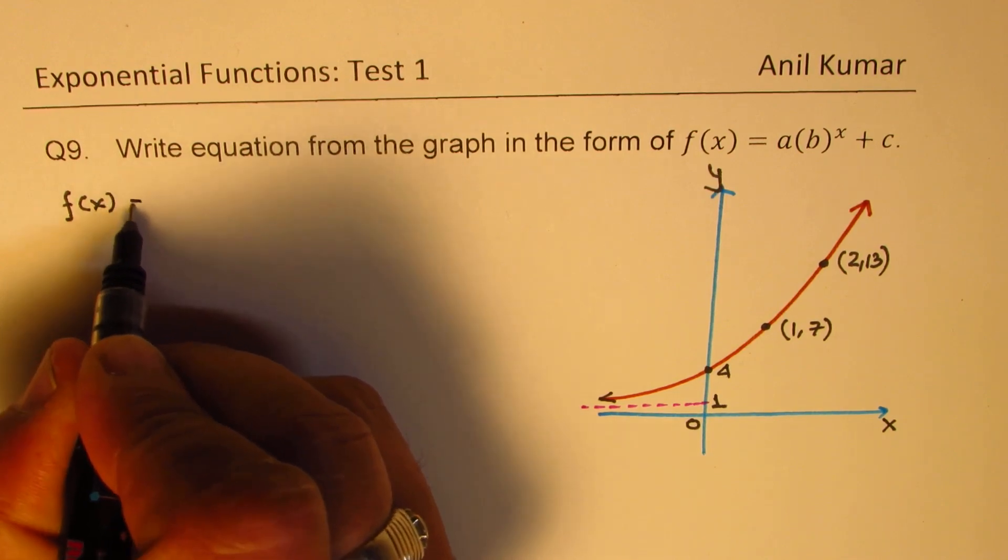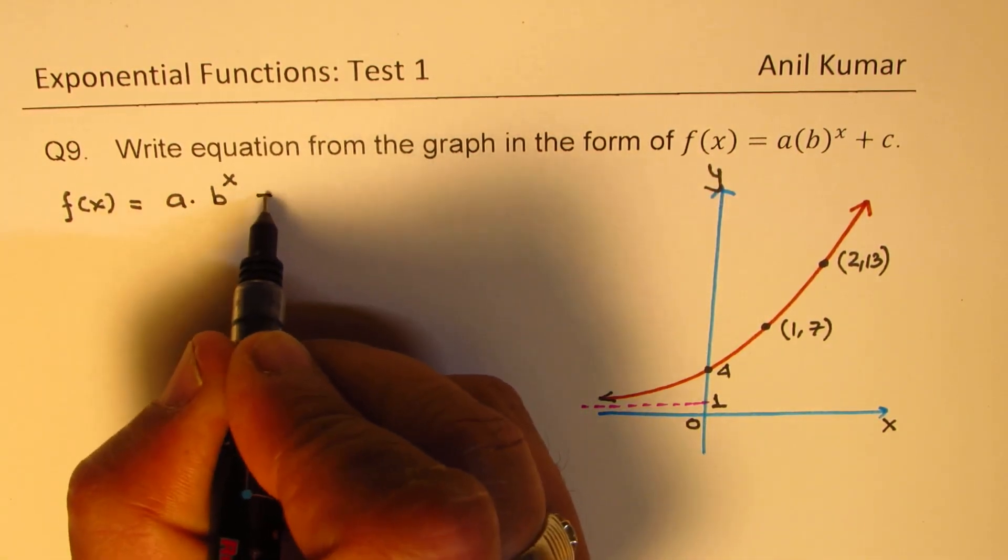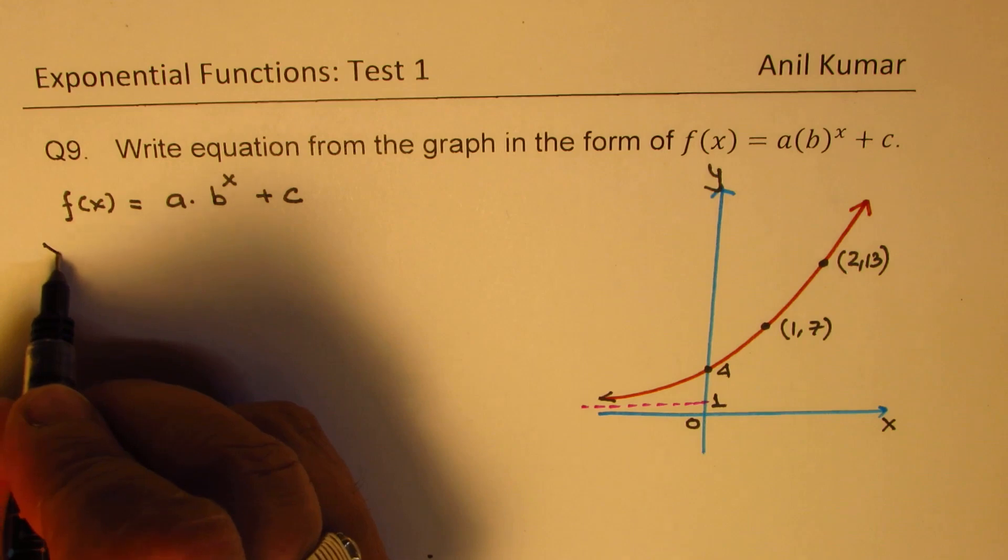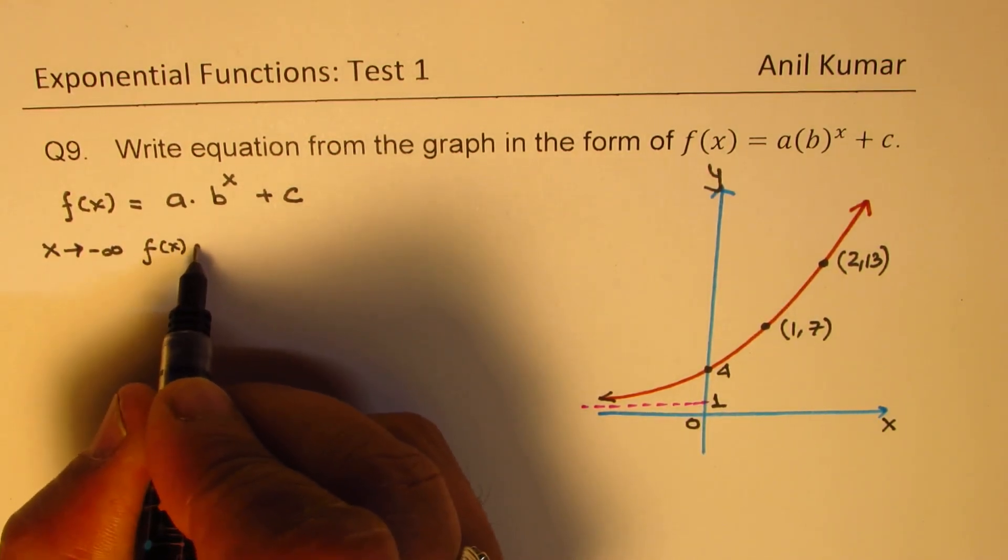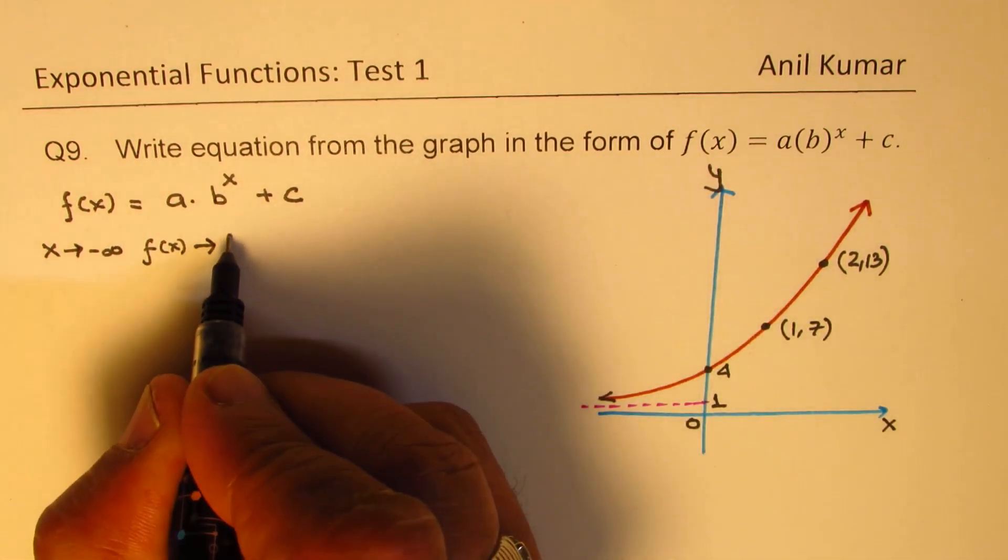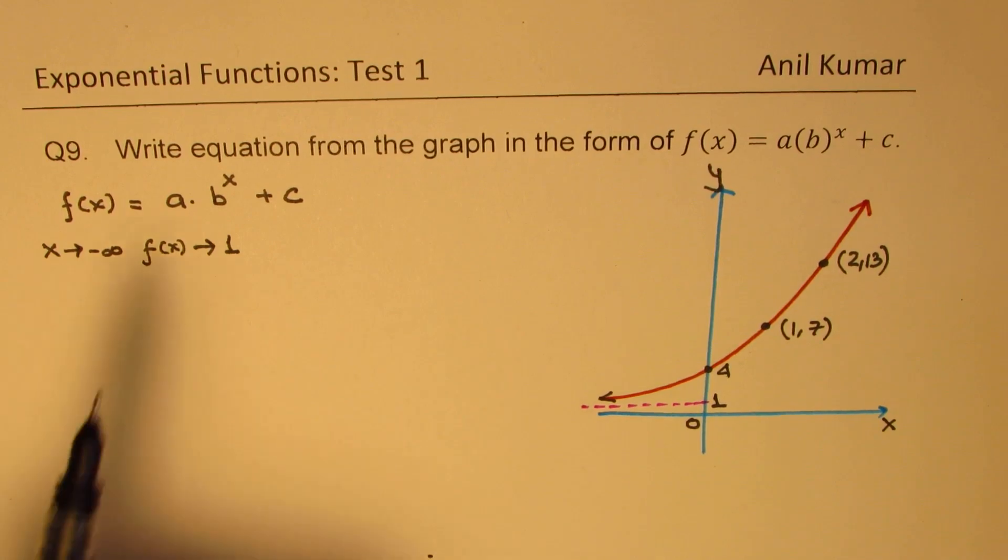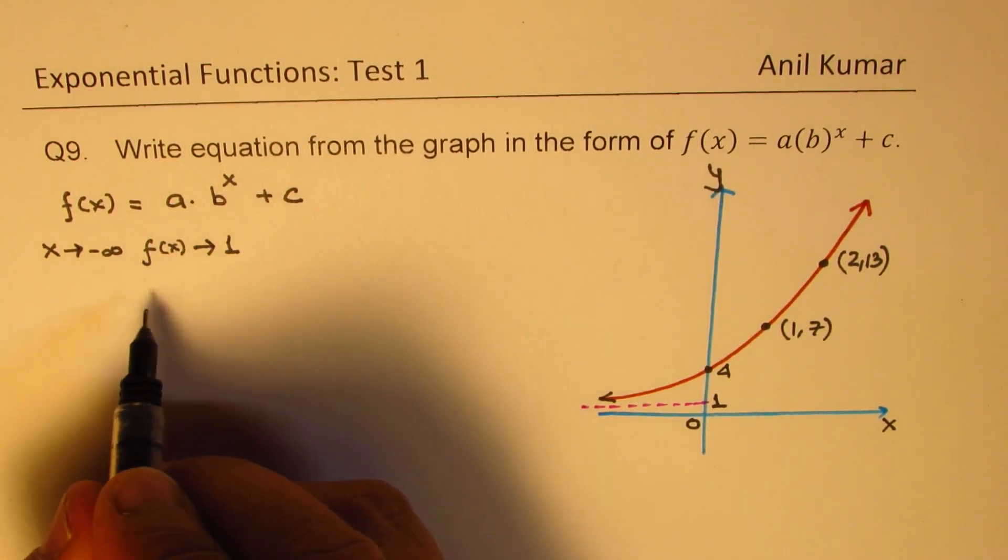So we are given the function in the form of a times b to the power of x plus c. Let's begin with this information, which is as x approaches negative infinity, f(x) approaches 1. So if I substitute this value here, what do I get? If x is negative infinity, that is to say, on the right side, if I write b...